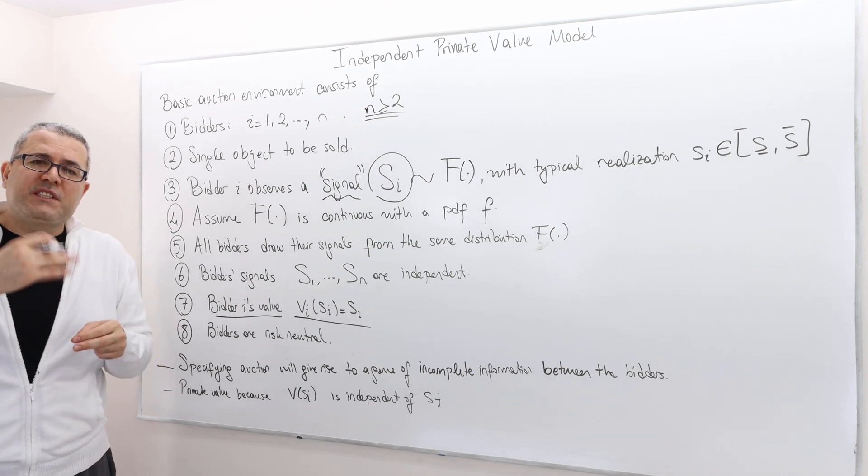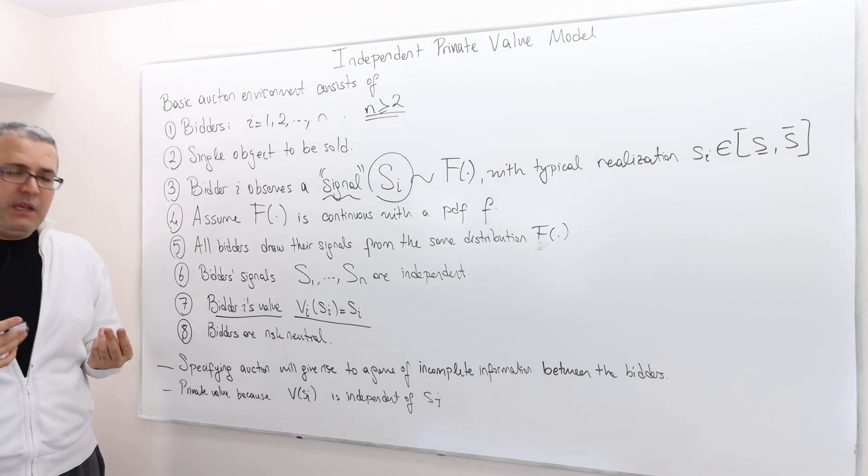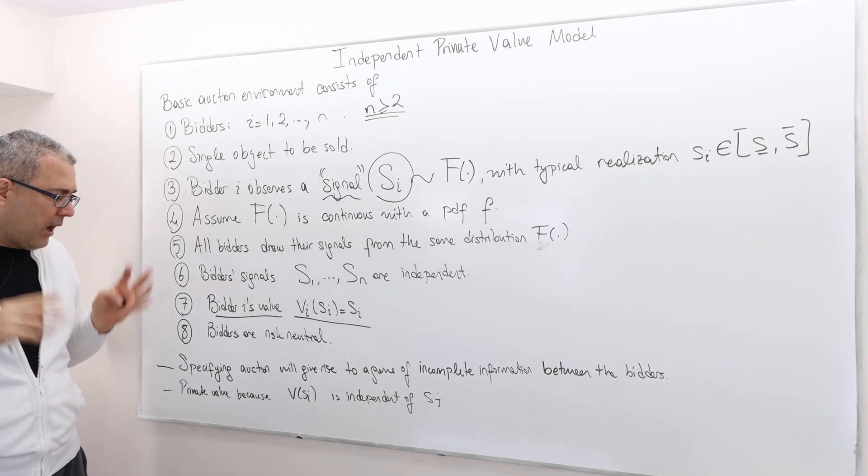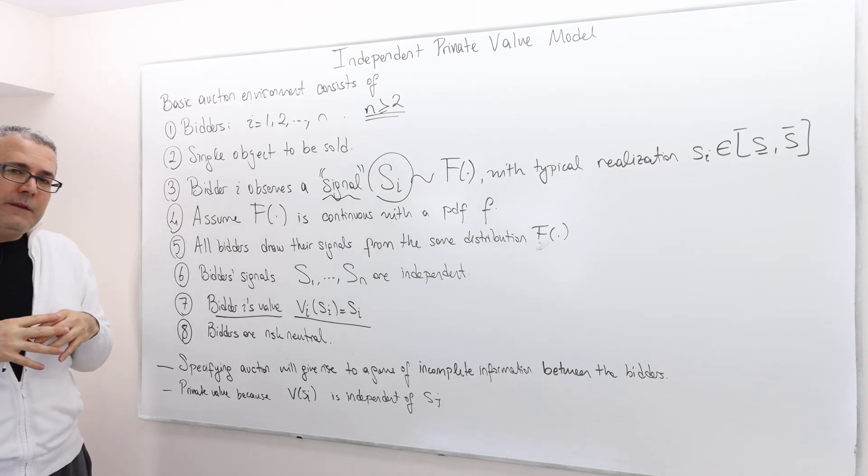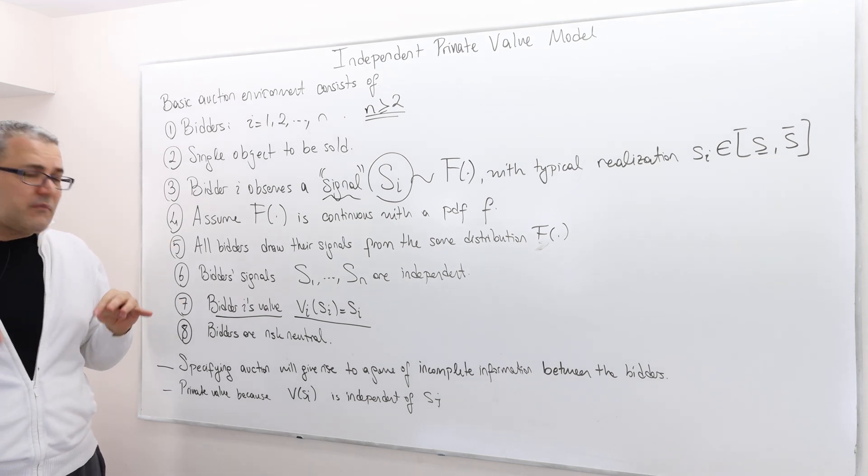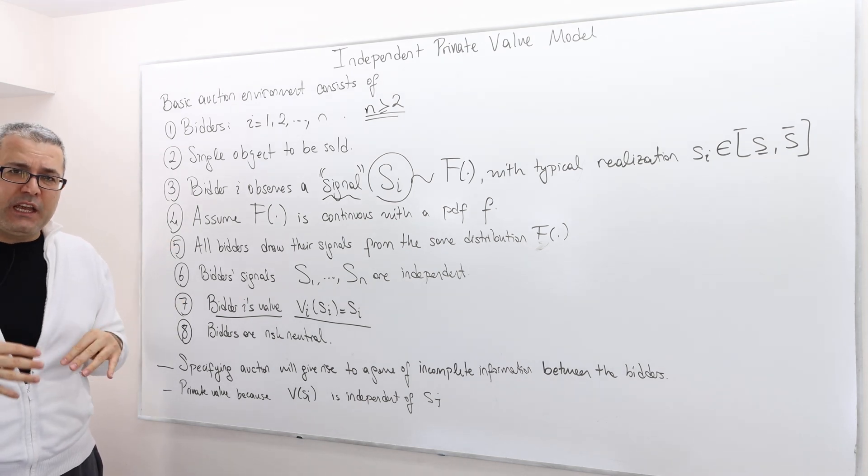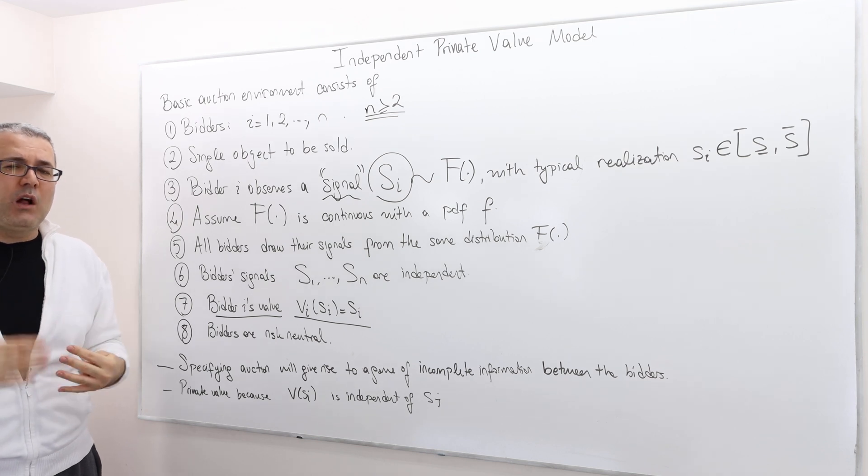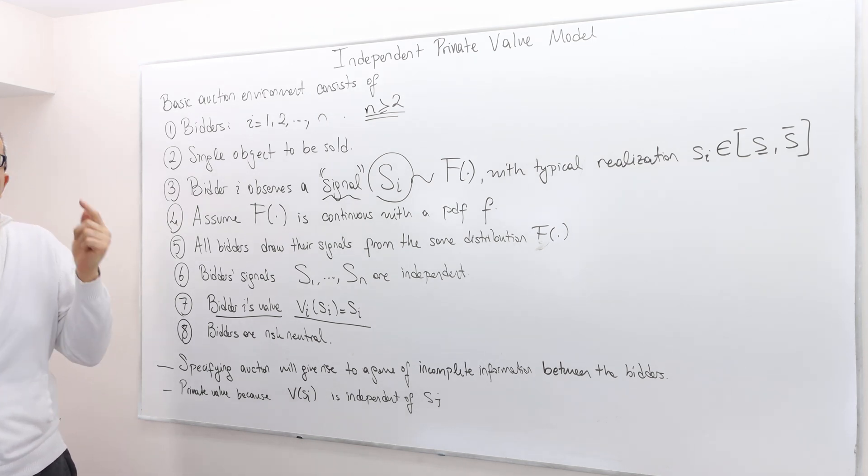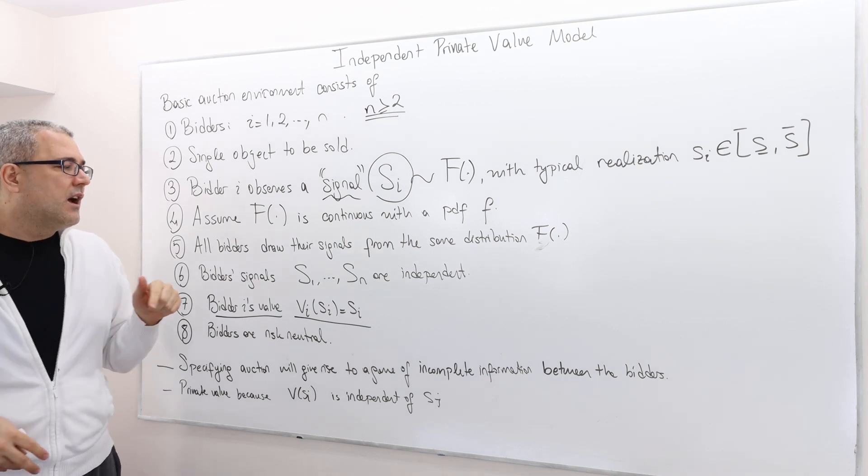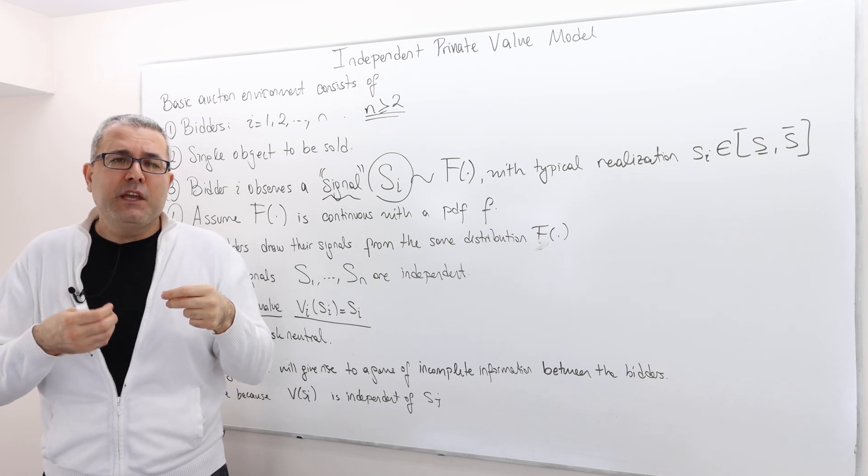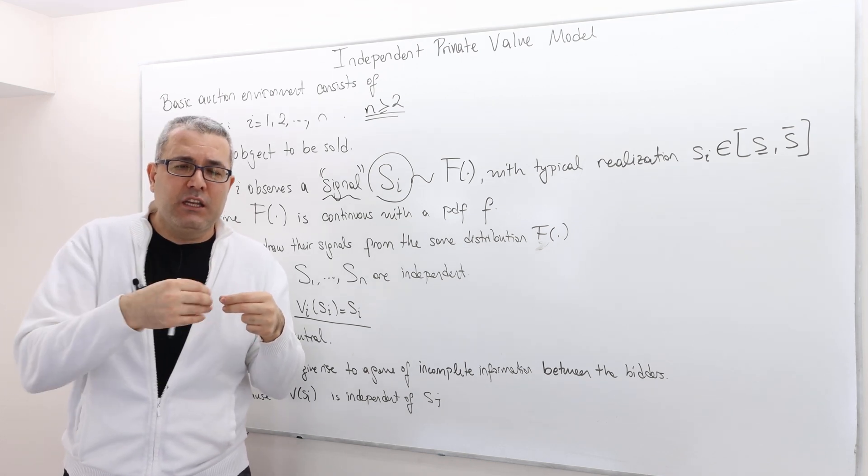Given all this, once you specify the auction—meaning who wins the object and who pays what—then we actually define a game, an incomplete information game among bidders. Why is it incomplete information? Because all players, the bidders, are having private information about how much they value their goods.